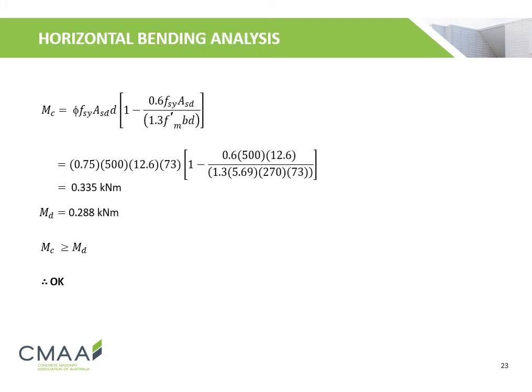The design bending moment must be less than the horizontal bending moment capacity, which is calculated to be 0.335 kNm. As the design bending moment of 0.288 kNm is less than the capacity, this satisfies the criterion, and thus the reinforced wall is okay for the given out-of-plane loading.